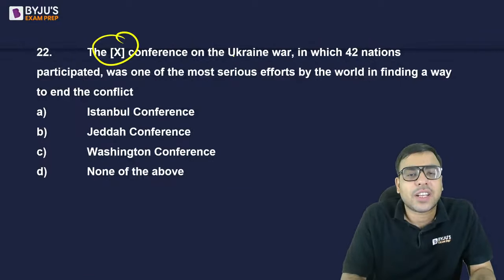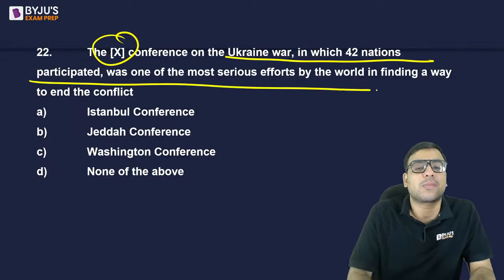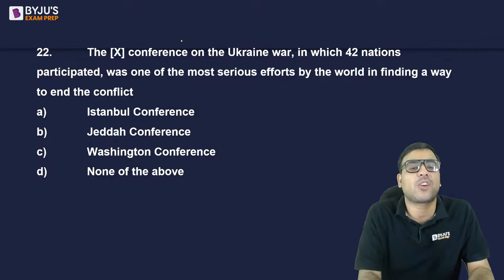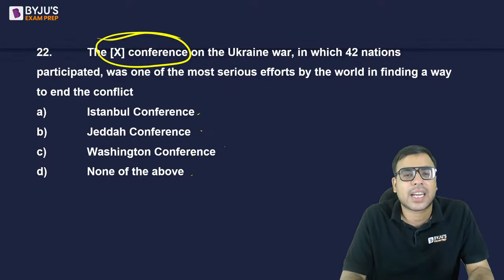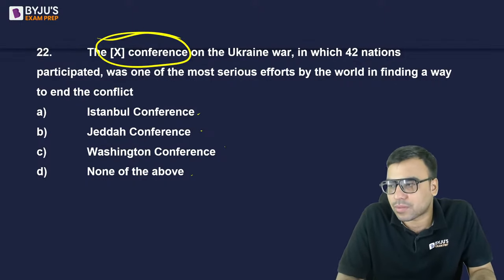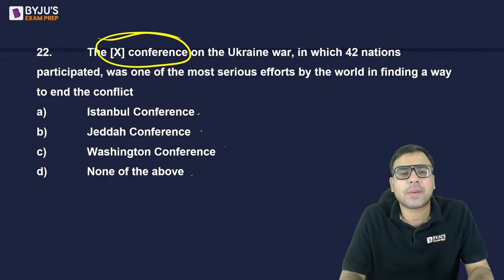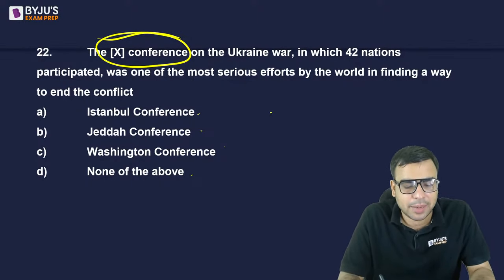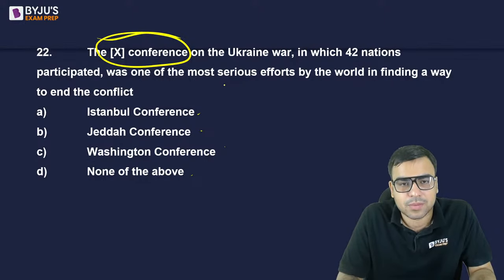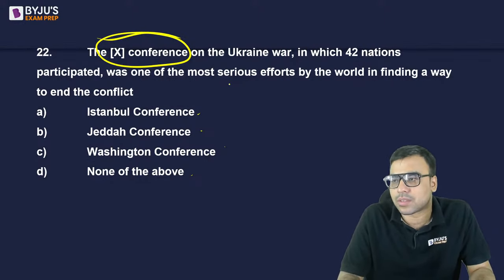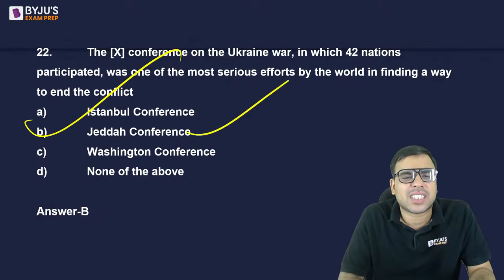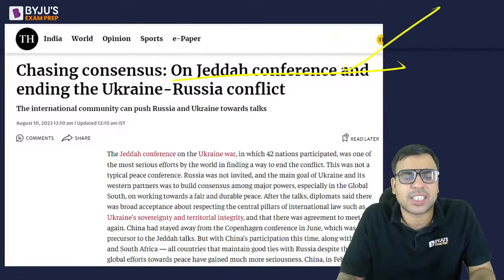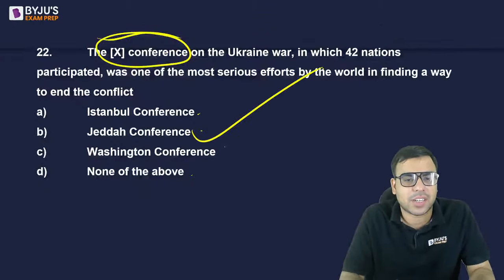Which conference on the Ukraine war had 42 nations participating? Istanbul, Jeddah, Washington, or none of the above? The right answer is B — the Jeddah Conference. Jeddah is a place in Saudi Arabia, and that is why this conference was in the news.